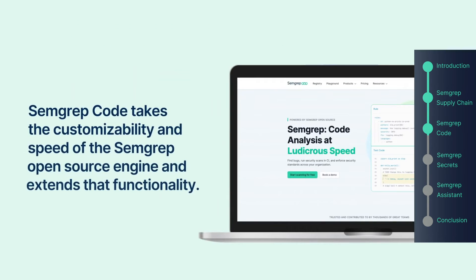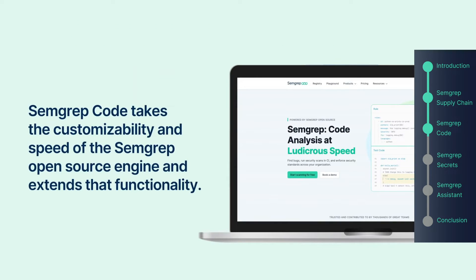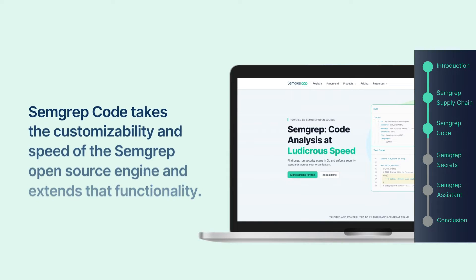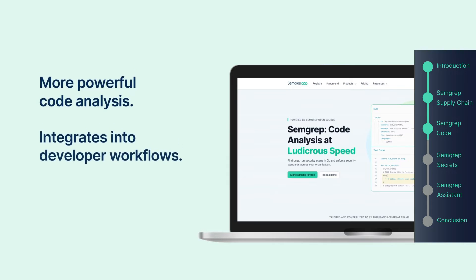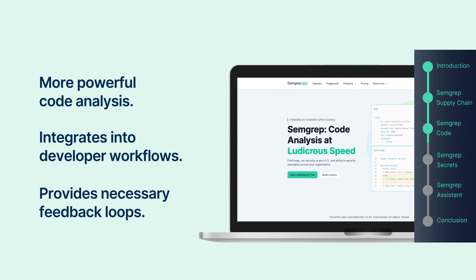Semgrep Code takes the customizability and speed of the open source engine and extends that functionality with more powerful code analysis, the ability to integrate into developer workflows, and with the necessary feedback loops to ensure that vulnerabilities are not only detected but actually get fixed.